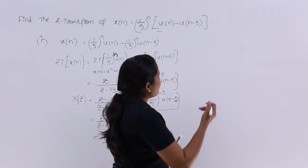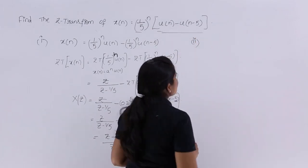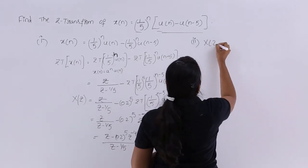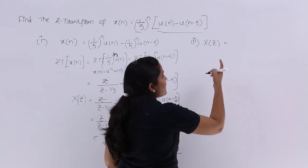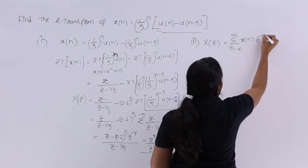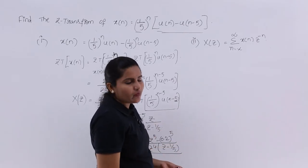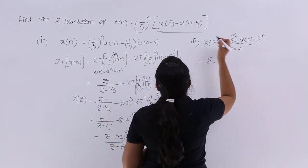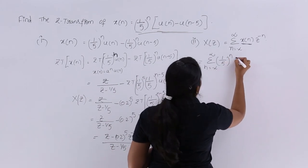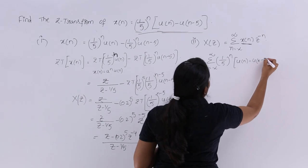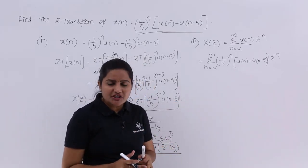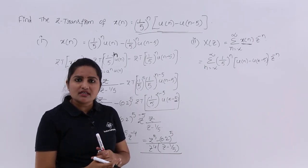We also have a second method. Using the direct Z transform formula, X(z) = sum from n = -∞ to ∞ of x(n) · z^(-n). I substitute the signal: sum from n = -∞ to ∞ of (1/5)^n · [u(n) - u(n-5)] · z^(-n). As I will explain, the unit step functions inside the summation will change the limits of summation.